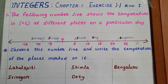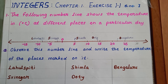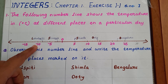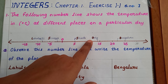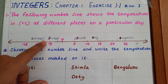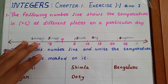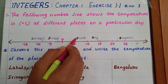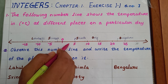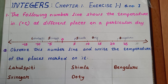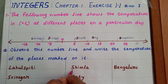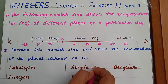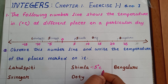Now we can do the first problem. The following number line shows the temperature in degrees Celsius at different places on a particular day. They have given a number line and 5 places are here. We want to find the corresponding temperature of each place. The first place is Shimla, and it is marked at 5. So 5 degrees Celsius is the temperature at Shimla.